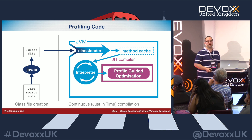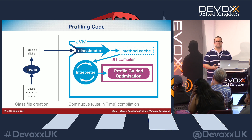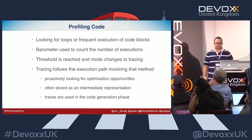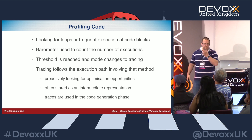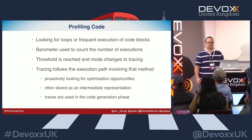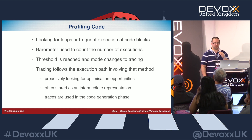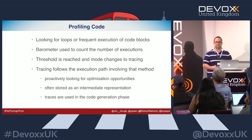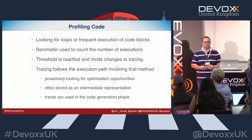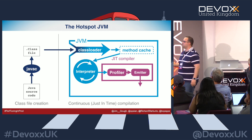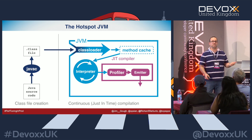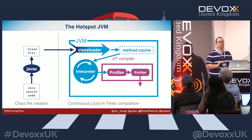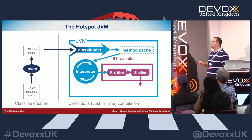This is called profile-guided optimization — taking a look at your code and figuring out what it's going to do. In terms of profiling code, it's looking for frequent execution of code blocks. From computer science terms, there's a counter — usually referred to as a barometer — and once that threshold is reached, it begins to make traces and figure out how to do those optimizations. Then you have a two-step process: profiling, then emitting machine-level instructions into a cache called the code cache.